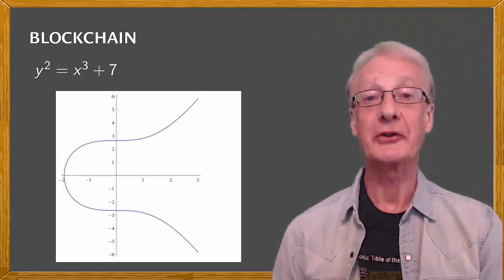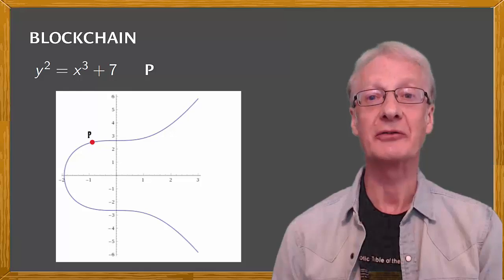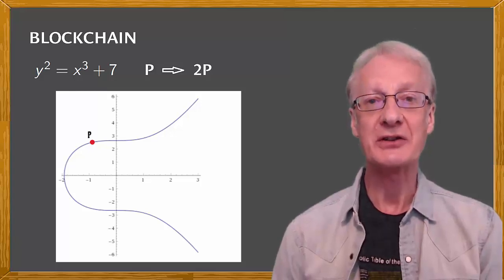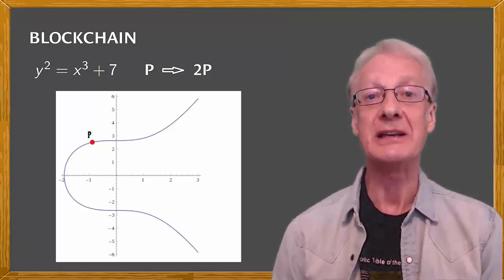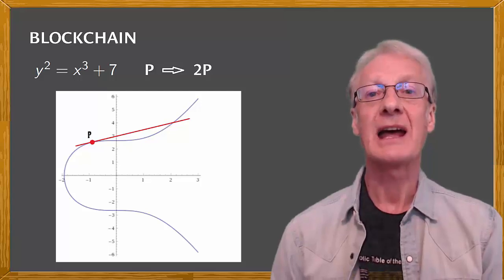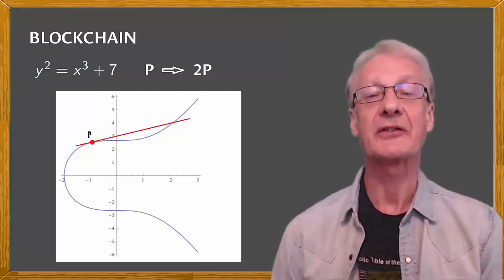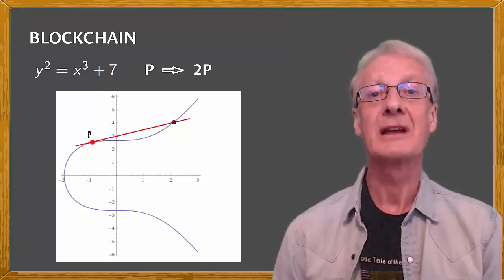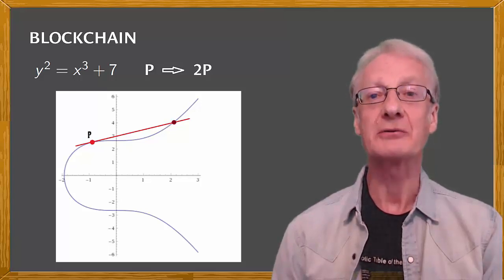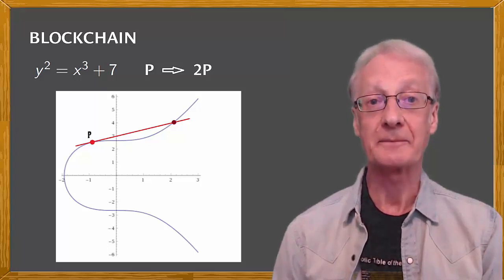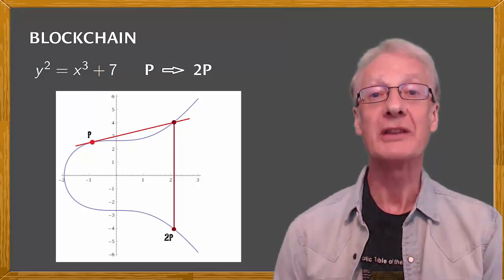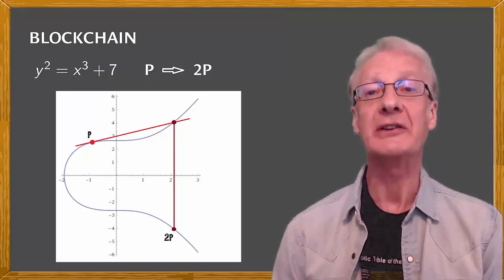We can also use the curve to add P to itself, to give P plus P, or 2P. To do this, we consider the tangent line to the curve at P, and extend this line until it intersects the curve at another point. The point that is symmetrical to this with respect to the X axis is 2P. Just rewind the video if you want to see these examples again.